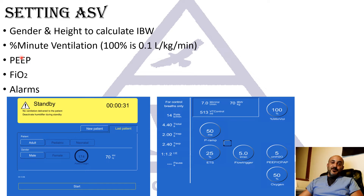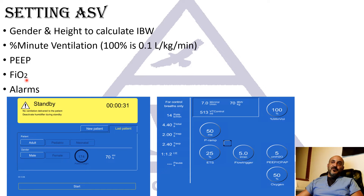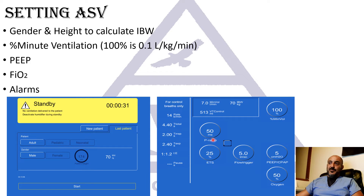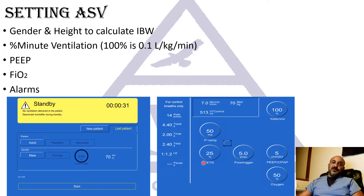Other settings you need to configure include PEEP — which, as in any mode of mechanical ventilation, is very important — FiO2, flow trigger, and the ramp, which controls how fast the pressure rises. You can also set the expiratory trigger sensitivity (ETS), which determines when the inspiratory cycle ends and expiration begins in pressure support mode. For example, at 25% ETS with a peak inspiratory flow of 50 L/min, exhalation starts once flow drops to 12.5 L/min.